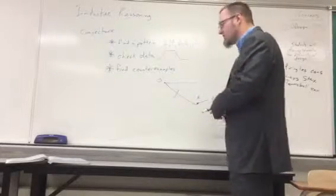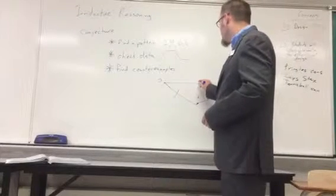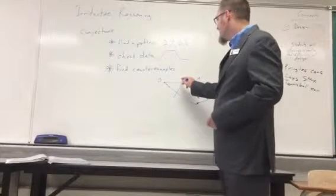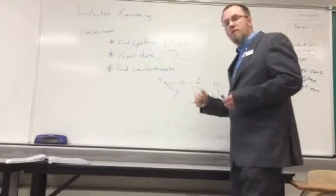Now, we can see in this case that that is not true. If we had an M here, and JM was congruent to ML, then yes, M would be the midpoint.